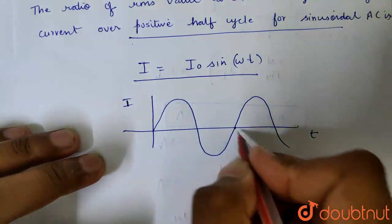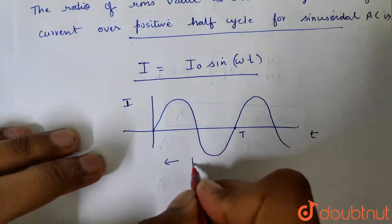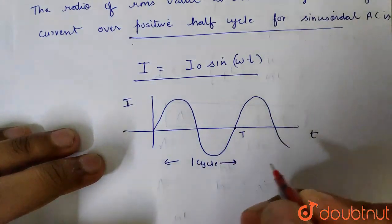This is my entire cycle T. How much is it? One cycle - we'll look at the positive half cycle.